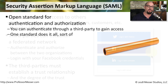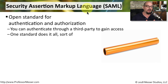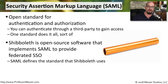One open method for authentication and authorization is SAML — the Security Assertion Markup Language — where you can authenticate through a third party to provide access to local resources. A good example of this is Shibboleth, which is an open source software that implements SAML to have this single sign-on capability.